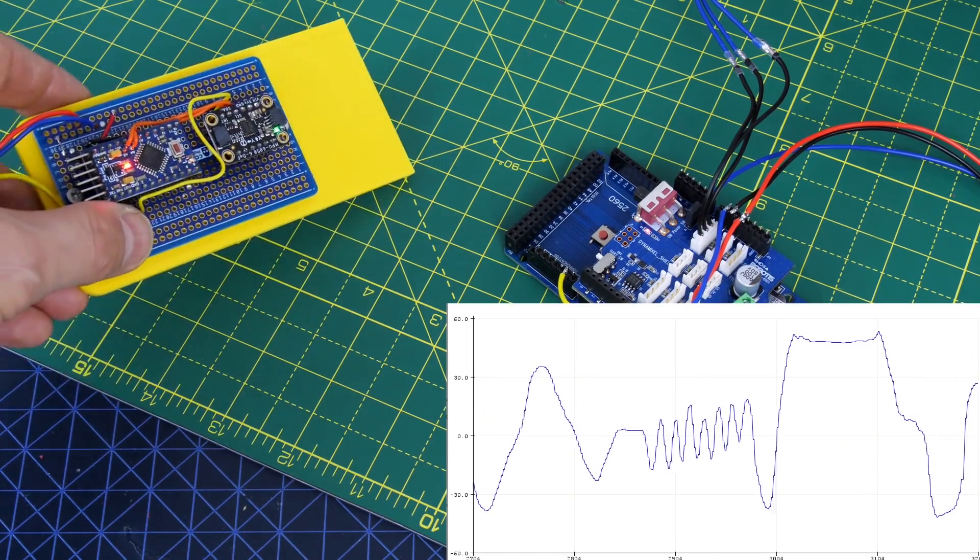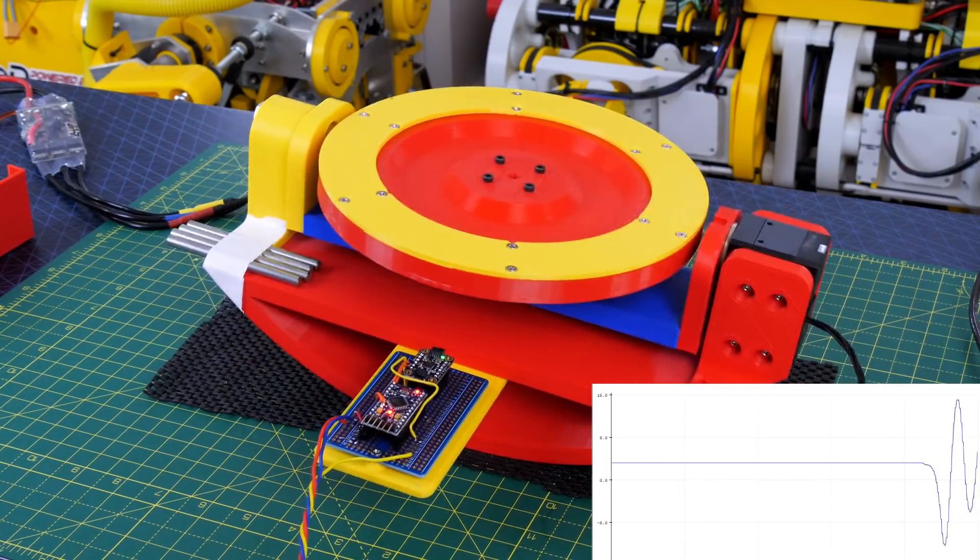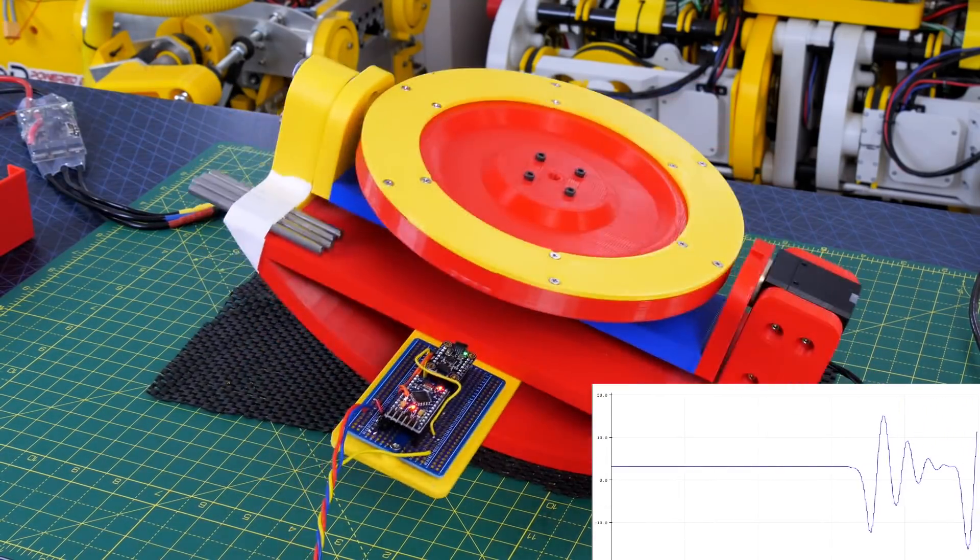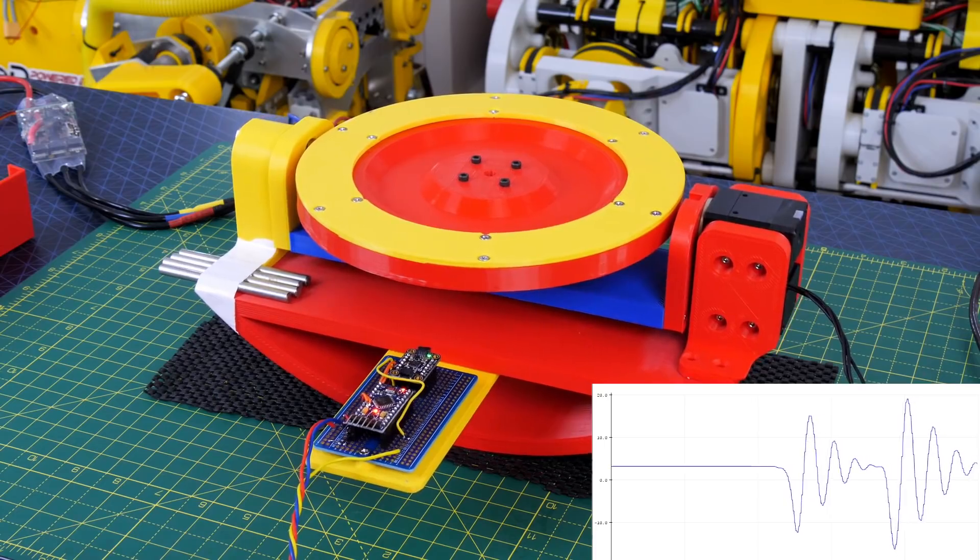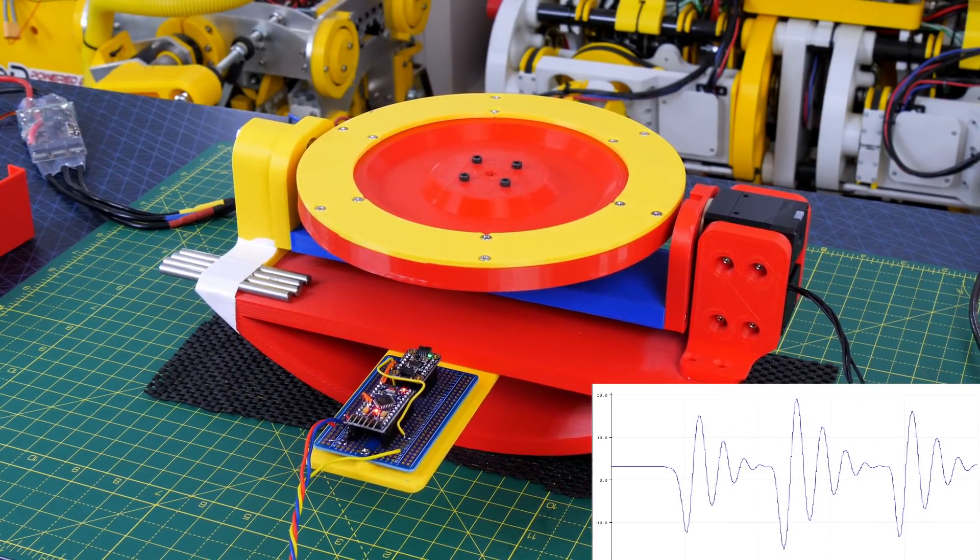And we can see we get a nice envelope of motion there. And of course attaching it to the boat hull means that we can read when it's being tipped, and hopefully actively control that gyro to compensate.